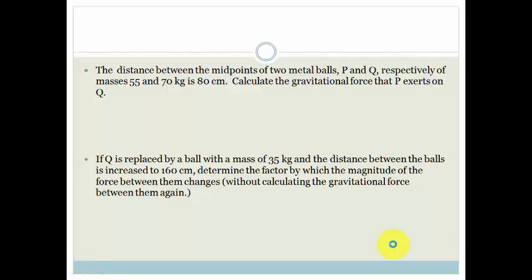Okay, so let's first of all get an idea of what we're doing and we're going to draw this. So we've got a little ball here, P, and we've got a little ball here, Q. And this has got a mass of 55 kg, and this has got a mass of 70 kg, and the distance between their centres is 80 cm.